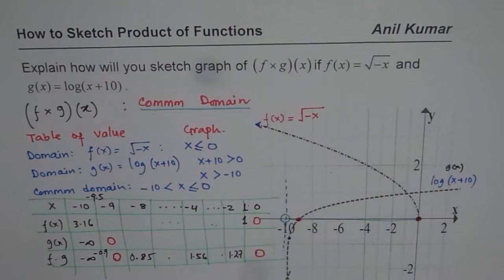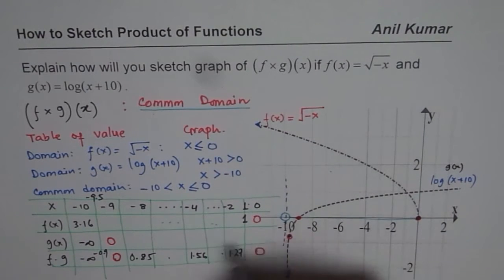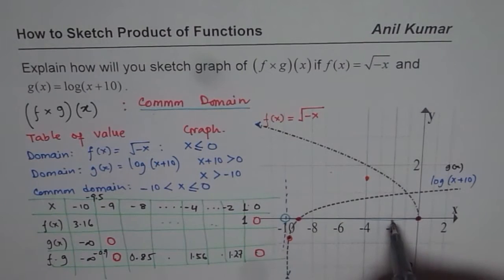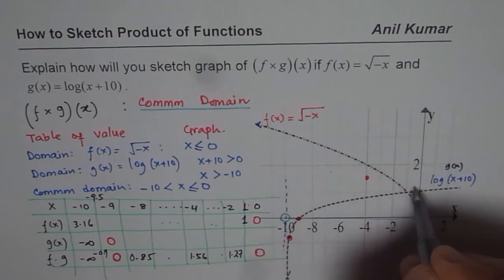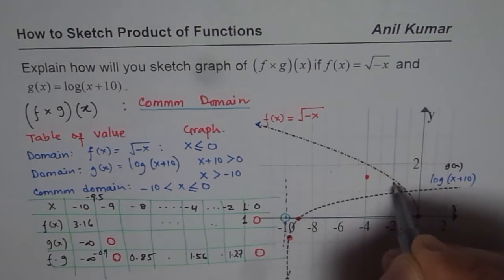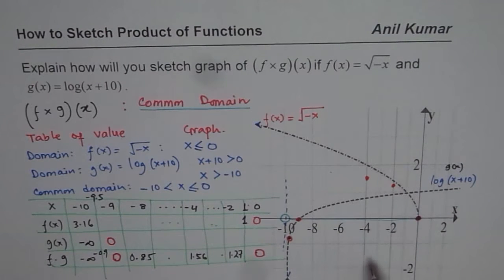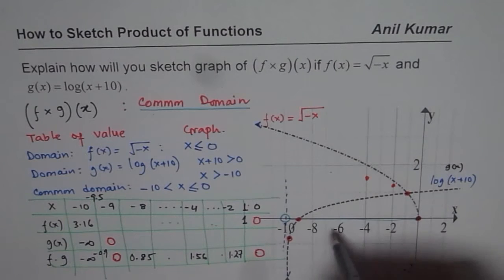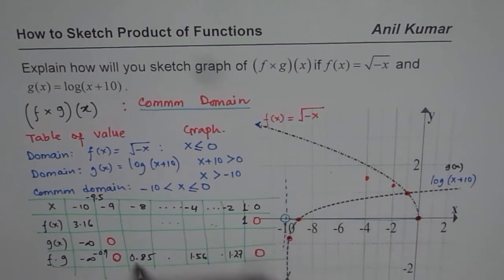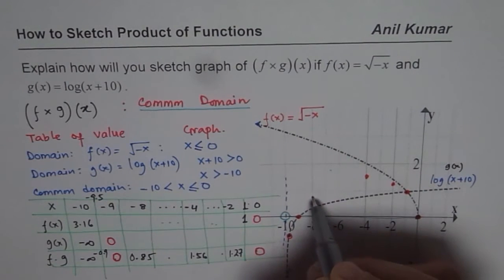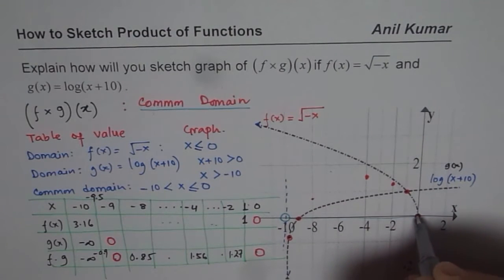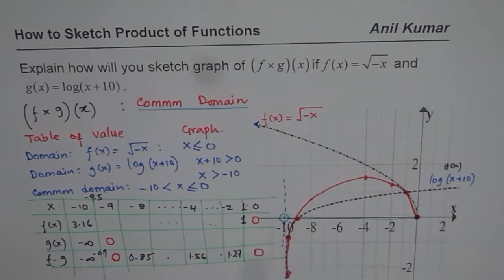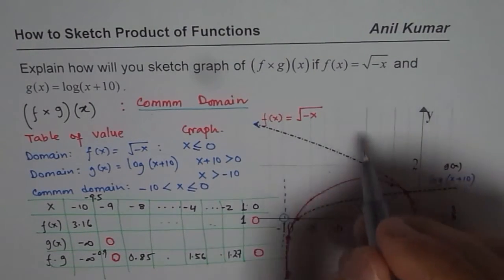Now let us plot these values on the graph and sketch it. We have two zeros. At minus 4 we have 1.56, which is slightly more than 1. At minus 2 we have 1.27, which is less than the square root function value. At minus 1 we have approximately 1. At minus 8 we have 0.85, which is less than 1. We can now join these points and the result is a curve that forms the graph of the product of the functions.